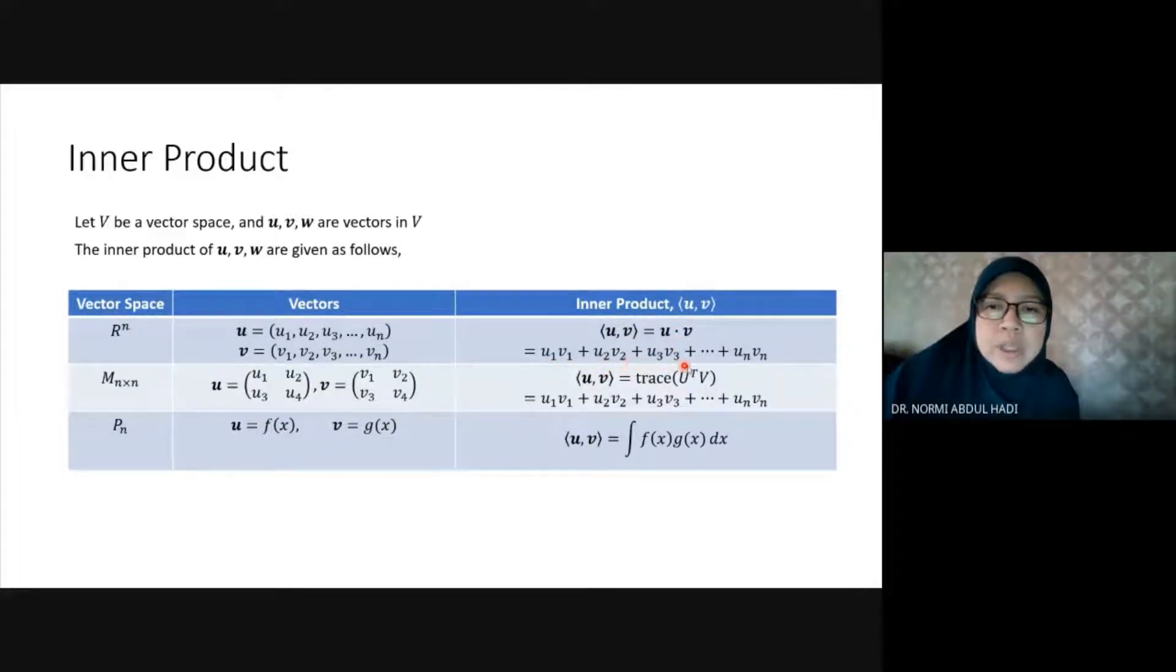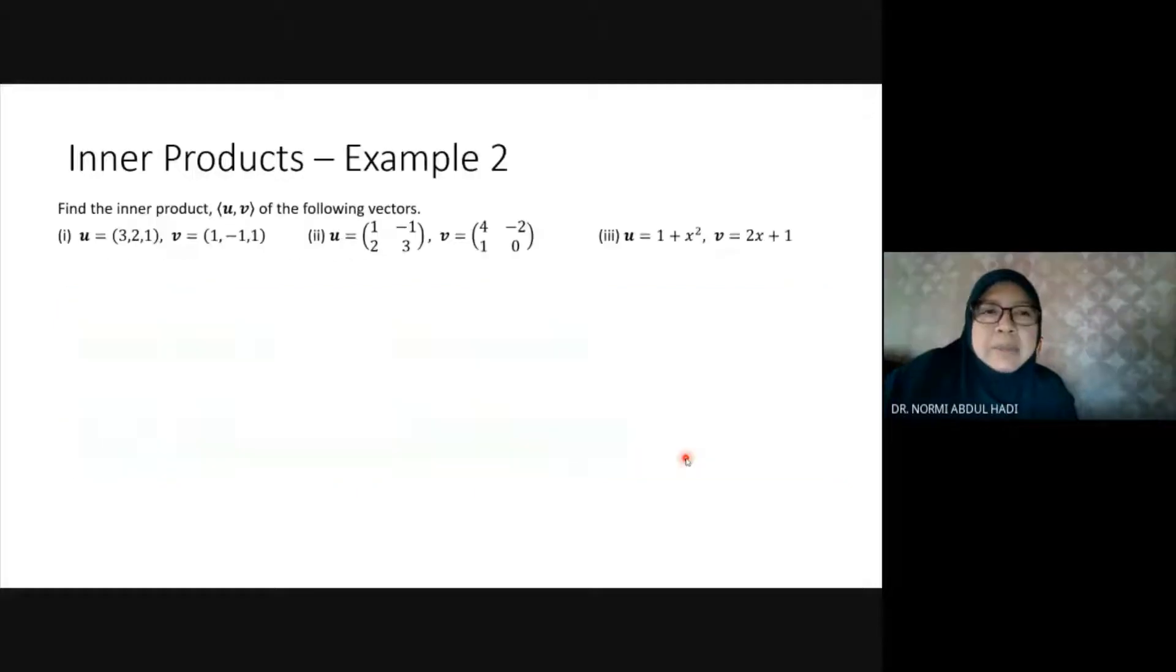For matrix vectors, the inner product is element by element: u1·v1 + u2·v2 + ... For polynomials u and v, the inner product of uv is the integration of u times v. These are the three types of vectors.